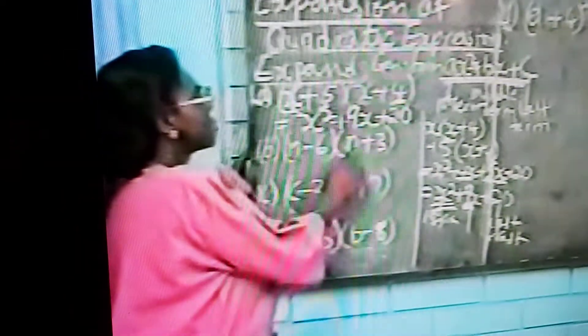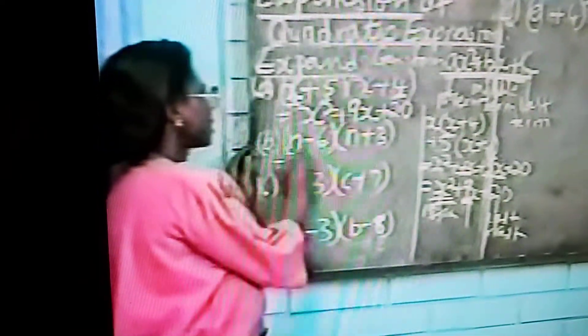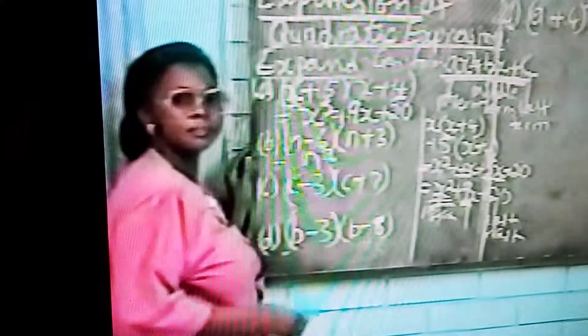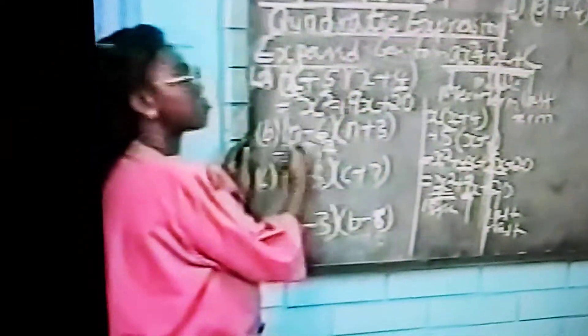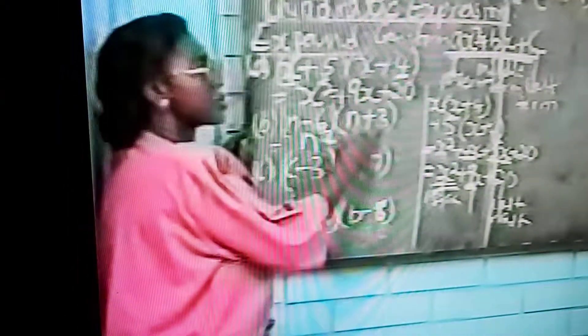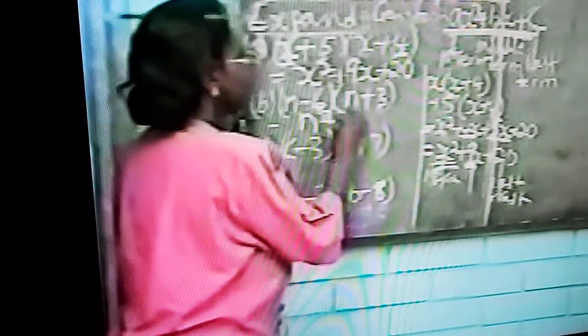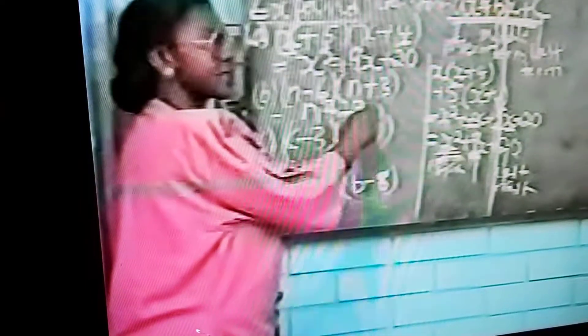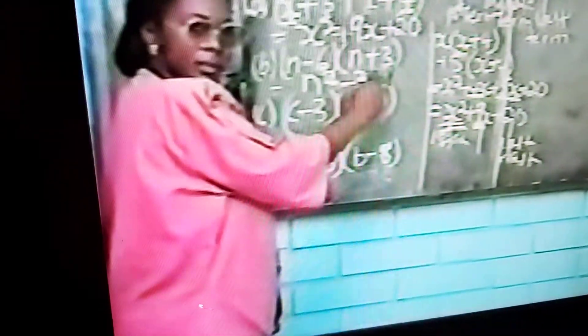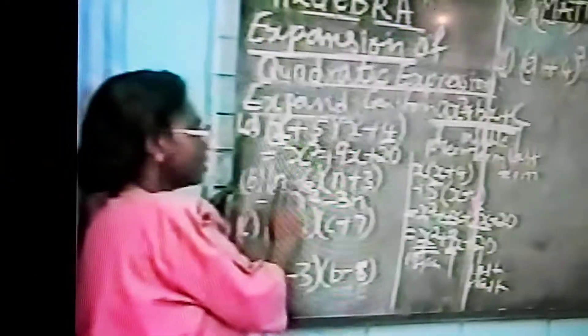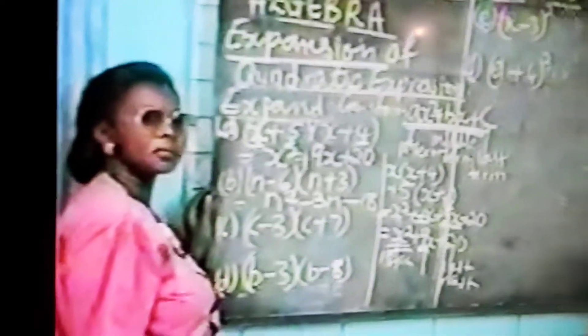Now we do n minus 6 into n plus 3. So first term, first times first, n times n equals n squared. Then to get the middle term, you add minus 6 to plus 3 because the coefficient of n is 1. So 1 times a number is still the same thing. So minus 6 plus 3 will give us minus 3. So you get minus 3n. Then minus 6 times plus 3. That is last thing in this bracket times last thing in this bracket to get the constant for the last step. Minus 6 times plus 3 will give us minus 18. Two different signs multiplied to give minus. 6 times 3 will give you 18. And that's all.